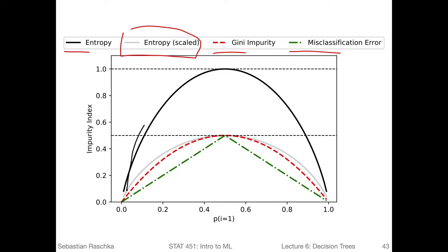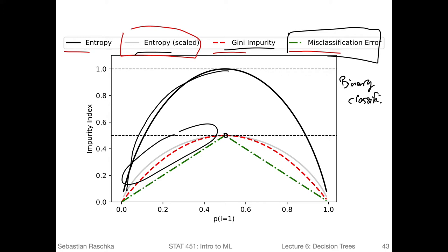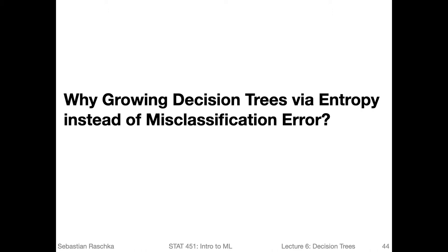For the entropy, that's the black line here - the tall one - you can see it's a concave function. The scaled entropy is just the entropy multiplied by 0.5, so we can compare it directly to the Gini, because they both peak at 0.5 for a binary classification problem. We can see that they are also concave. In contrast, the misclassification error is not concave - it has a sharp peak at 0.5 and then these linear or straight slopes.